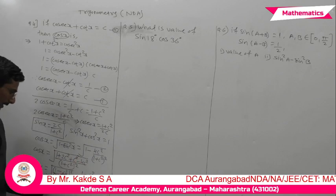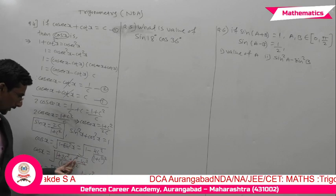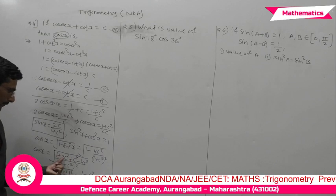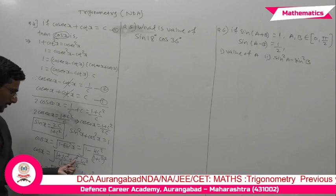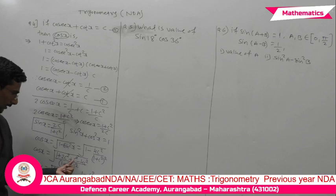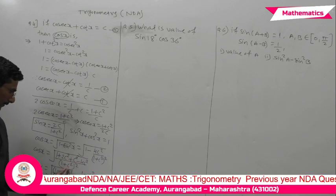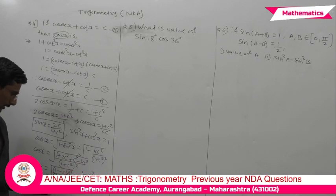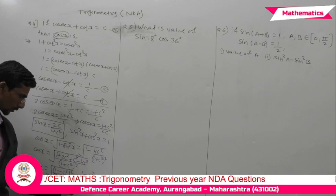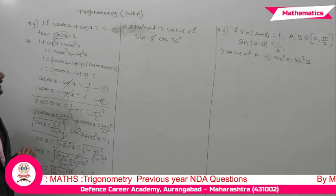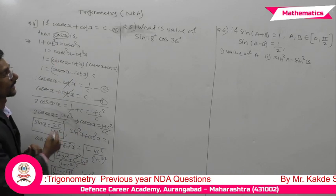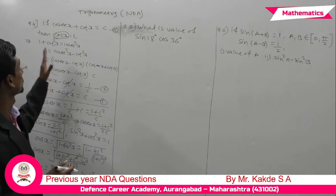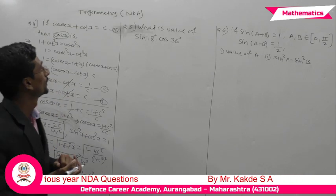Since both numerator and denominator are perfect squares under the root, the root simplifies to (c² - 1)/(c² + 1), which is the same as (1 - c²)/(1 + c²) with a sign adjustment. So cosx = (1 - c²)/(1 + c²). This is the solution of example four.